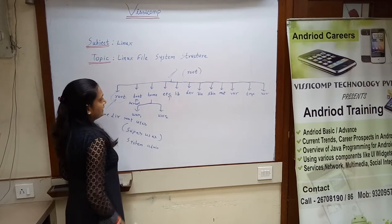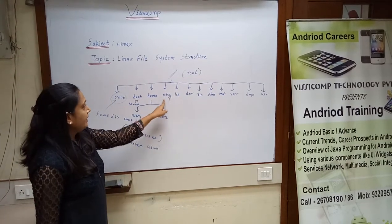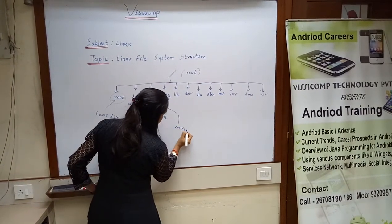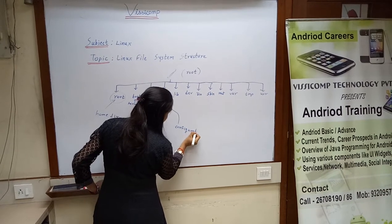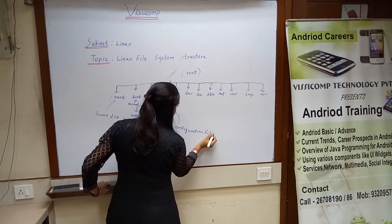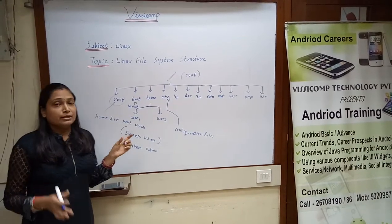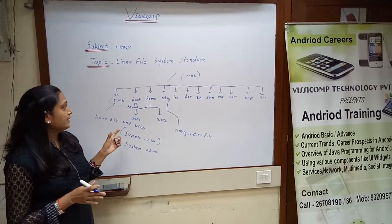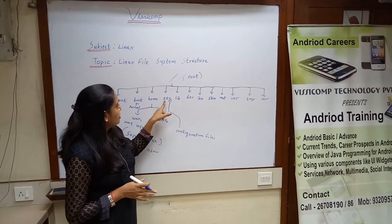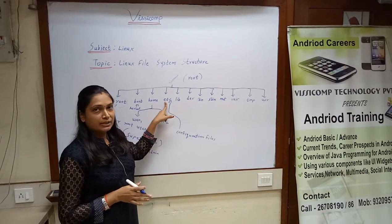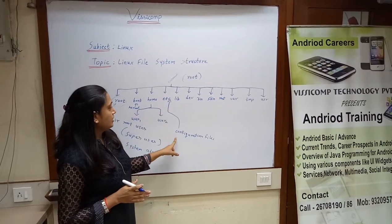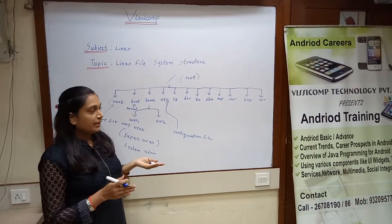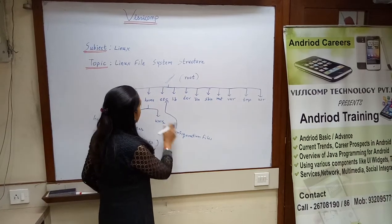Next is the ETC directory. The ETC directory contains all the configuration files. If the system administrator makes any changes to the system — such as mouse-related, keyboard-related, user add, or networking-related information — all those files are stored in ETC.